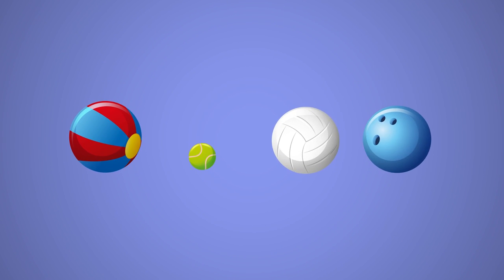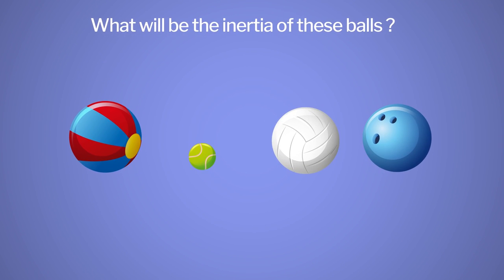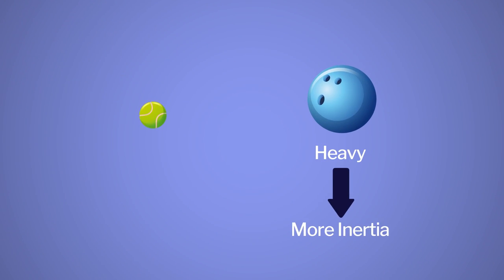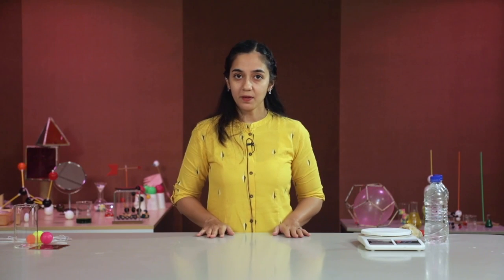Here we have different types of balls. Can you tell what will be the inertia of these balls? We can compare the inertia of these balls only after knowing their masses. The ball which is heavier will have more inertia compared to the ball that is lighter. Similarly, like in the previous example, the bag of one kilogram of cotton and one kilogram of onions will have the same inertia.